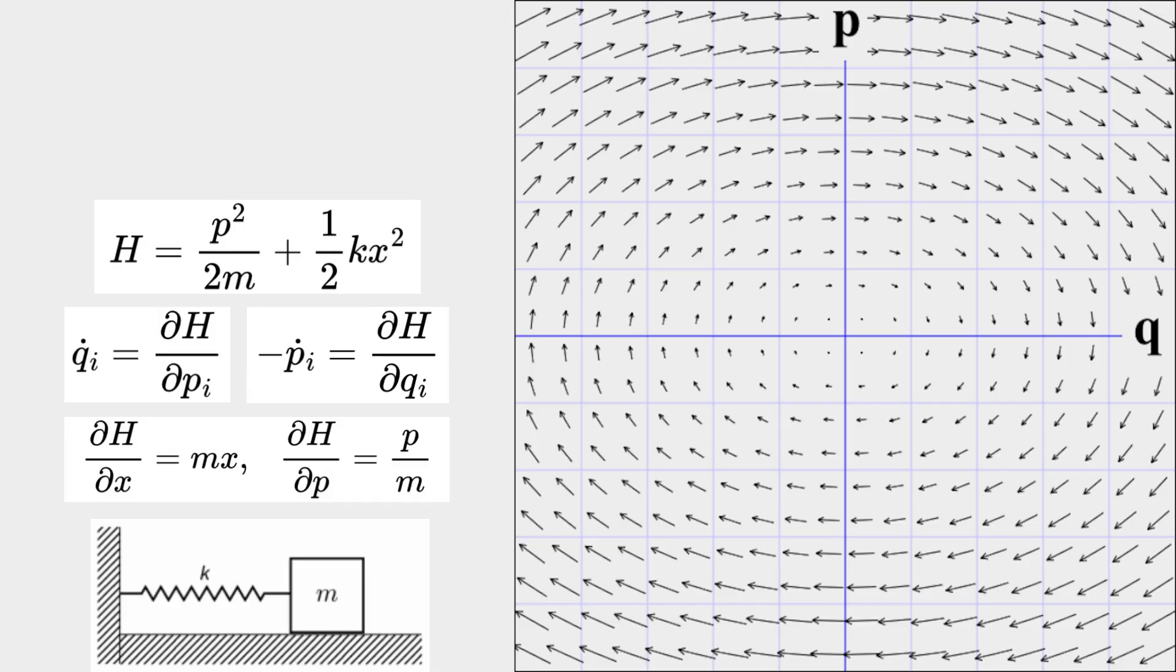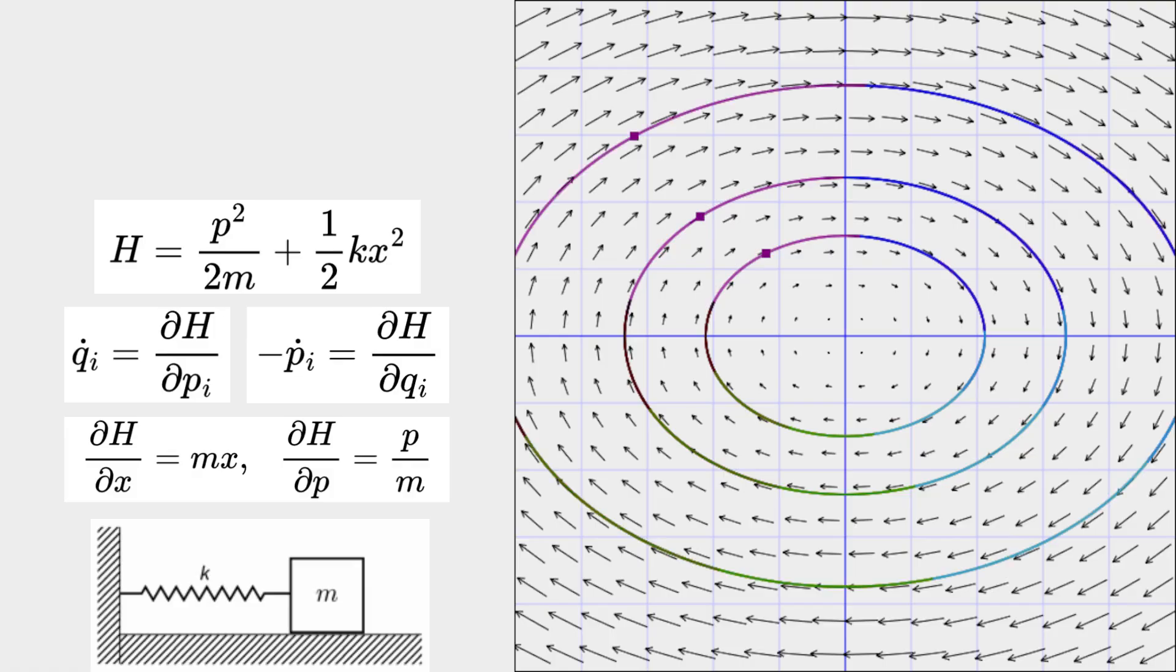Remember, in this graph we're only looking at the horizontal position and how fast we're moving horizontally. The higher above the horizontal axis, the faster we're moving to the right, and the lower below the horizontal axis, the faster we're moving to the left. If we find ourselves at a particular point, the arrow at that point tells us how our position and momentum are changing at that moment and where we'll move to next. By following the arrows, we can see the exact path we will take in the future and how we got here from the past. And the only difference between each path is the total energy.